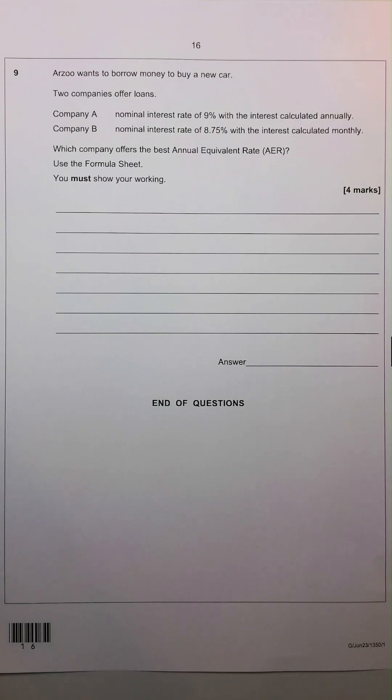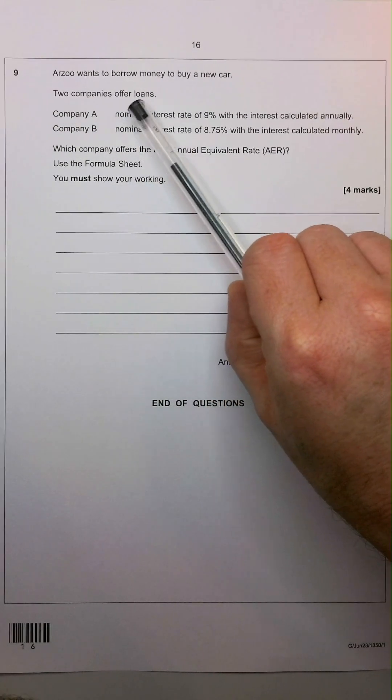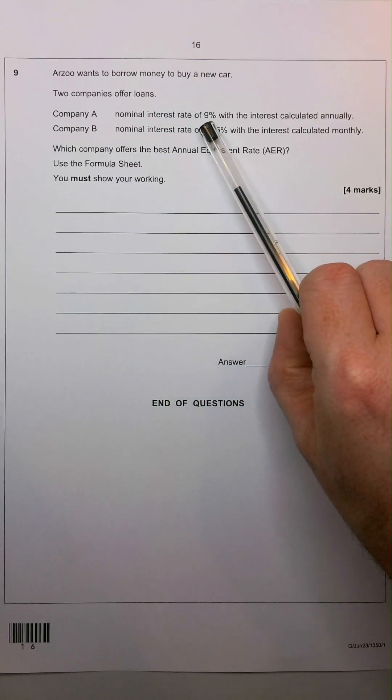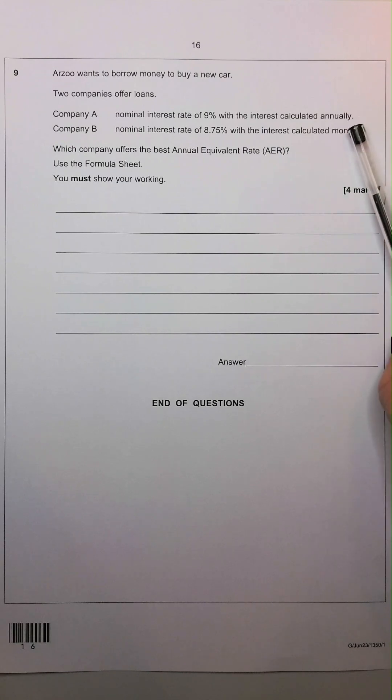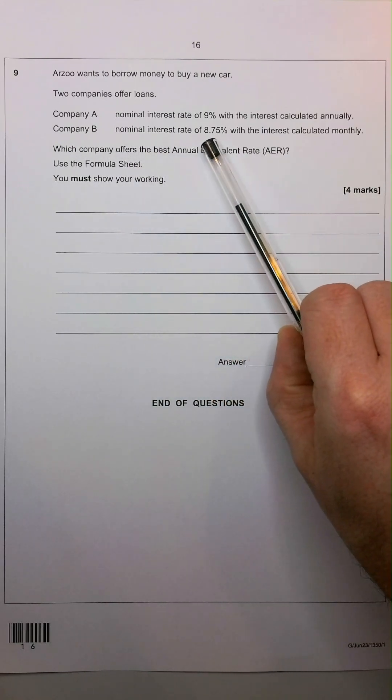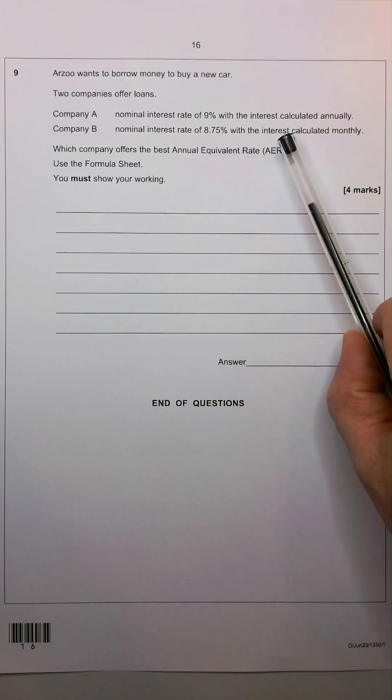So this question is all about AER, or Annual Equivalent Rate. Arzu wants to borrow money to buy a new car. Two companies offer loans. Company A offers a nominal interest rate of 9% with interest calculated annually, whereas Company B has a nominal interest rate of just 8.75% with the interest calculated monthly.